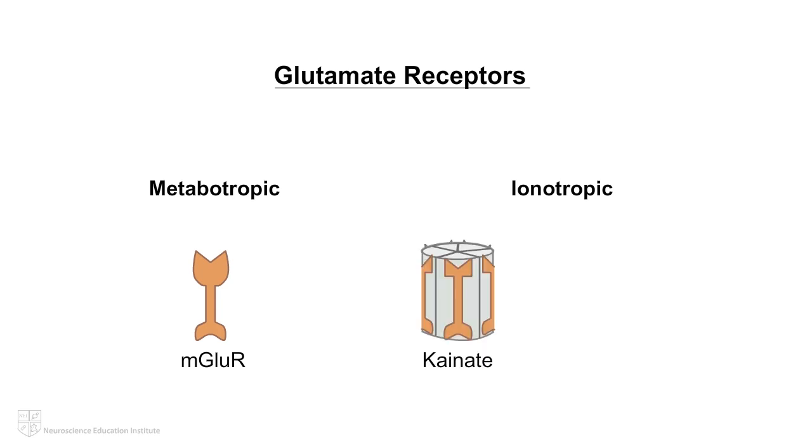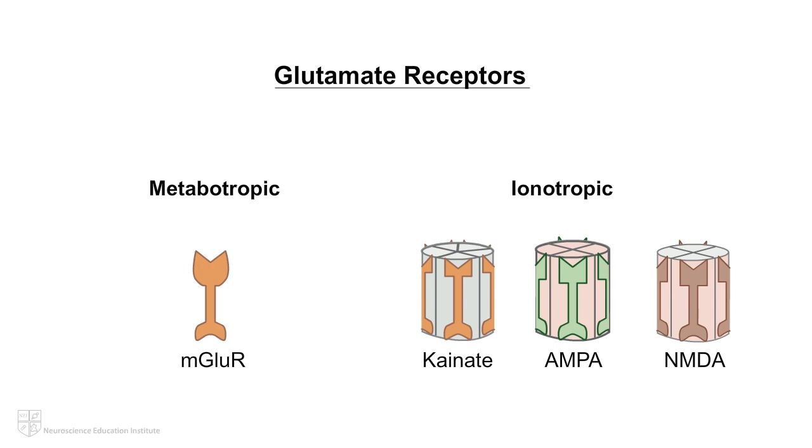There are four types of receptors to which glutamate binds: a G-protein-coupled metabotropic glutamate receptor, MGLU-R, and three types of ligand-gated ionotropic receptors: canate receptors, alpha-amino-3-hydroxy-5-methyl-4-isoxazole-propionic acid, more commonly referred to as the less tongue-twisting AMPA receptors, and NMDA receptors.